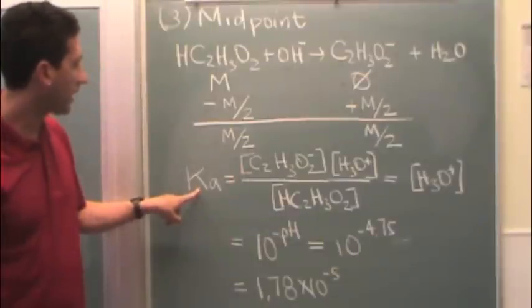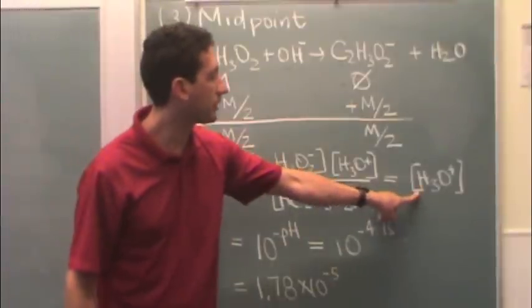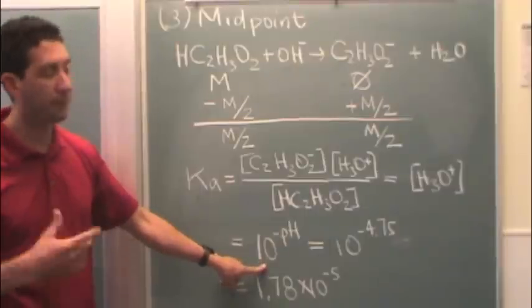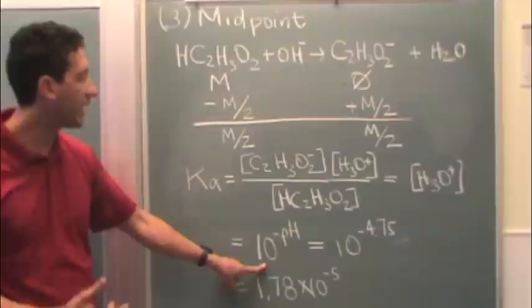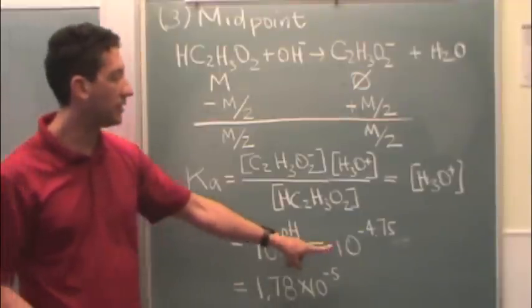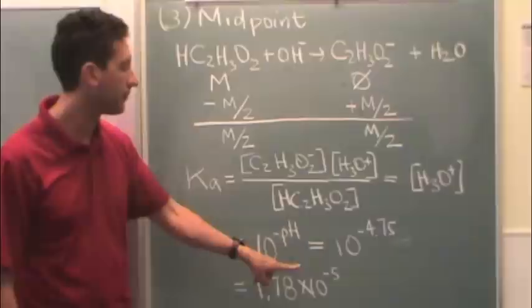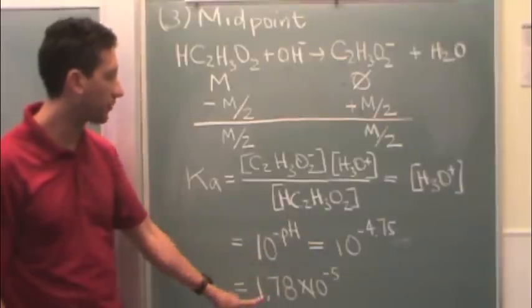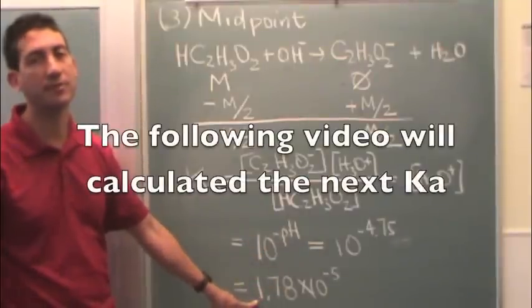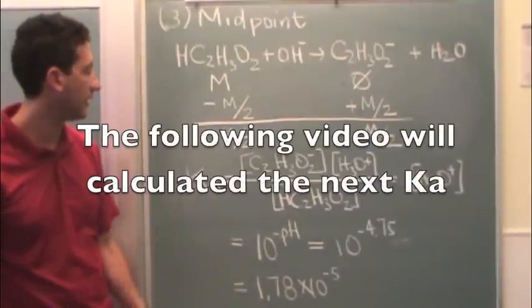And so now Ka is just the H3O plus concentration, which is, if you work backwards from the pH, 10 to the minus pH. We know the pH at the midpoint. You measured that. That's 4.75. And so if you just plug that in, in this case we got 1.78 times 10 to the minus 5. And there's Ka.